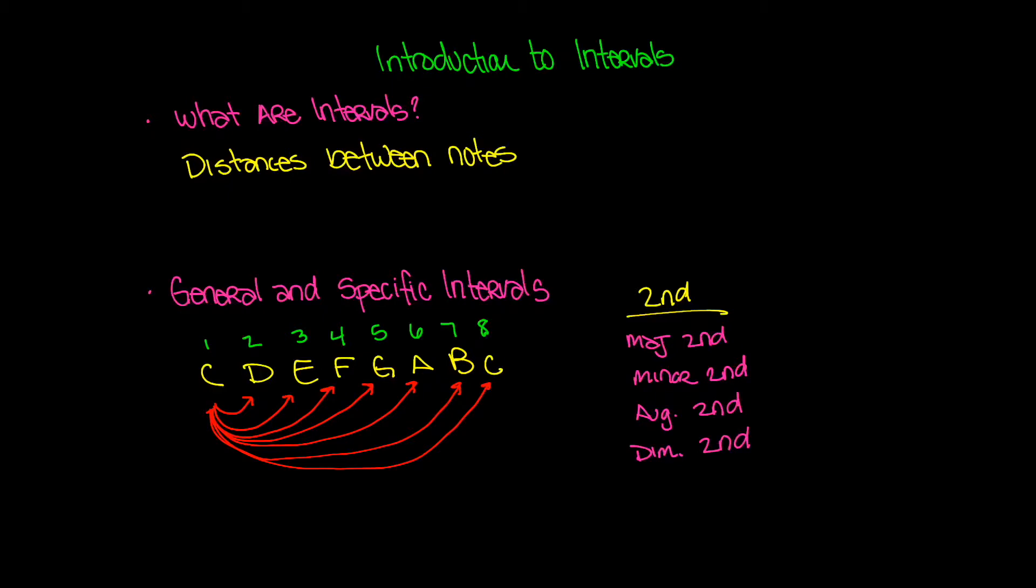So that's sort of the difference. Specific intervals are specific. They tell you exactly what kind of second you are dealing with versus a general interval just kind of points you in the right direction.